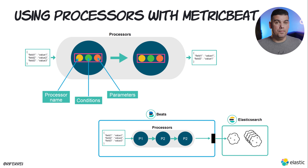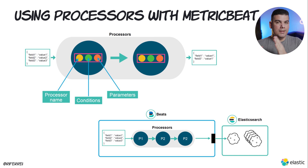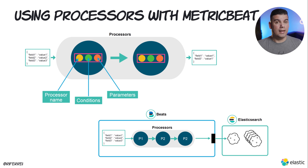Processors are built-in implementations that come out of the box with beats. They allow users to add them in the form of a pipeline that is responsible for mutating these events into the format that you want to achieve. There are different types of processors available — processors that allow you to drop events, add new events, and sometimes processors that allow you to implement some conditional logic. Processors are a great way to implement all this logic at the edge, which means that all the data mutation is going to occur where the data has been captured, and therefore you are not going to send unnecessary data through the network to any of the outputs.